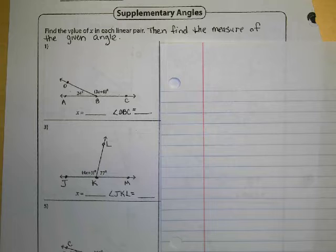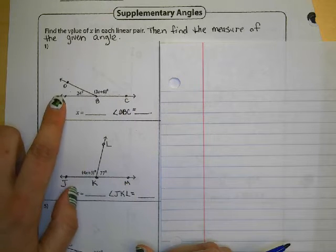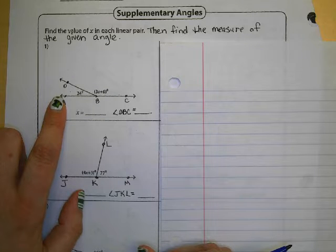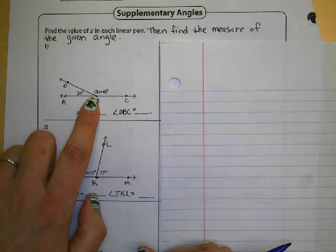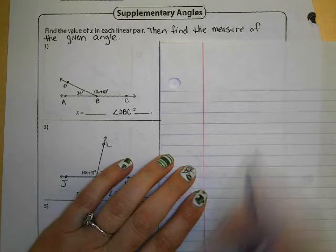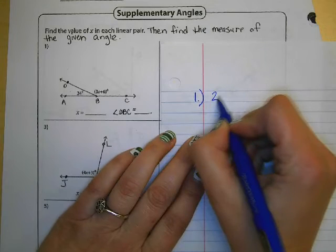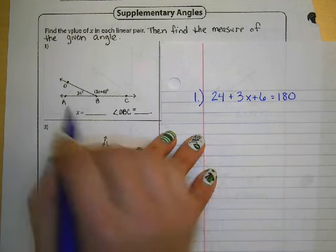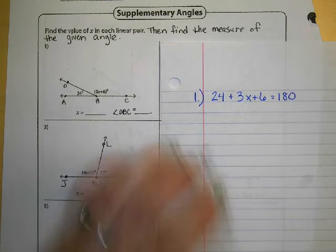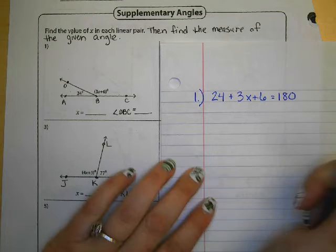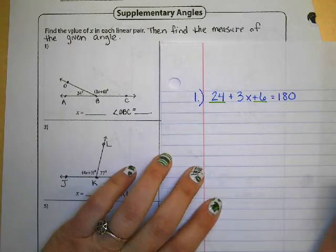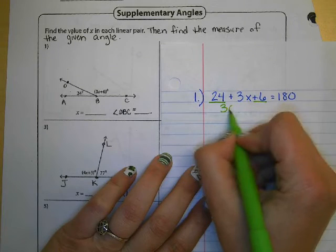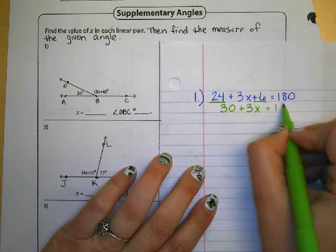On the second page, we're going to do number one with supplementary angles. You're going to find the value of x on each linear pair just like we did with complementary, then find the measure of the given angle. Now we have a straight line here, and we know that a straight line is 180 degrees. We have two angles that make up that line: 24 degrees and 3x plus 6. So this time the same process gives us 24 plus 3x plus 6 equal to 180 degrees. Combining like terms: 24 plus 6 is 30, so 30 plus 3x equals 180.